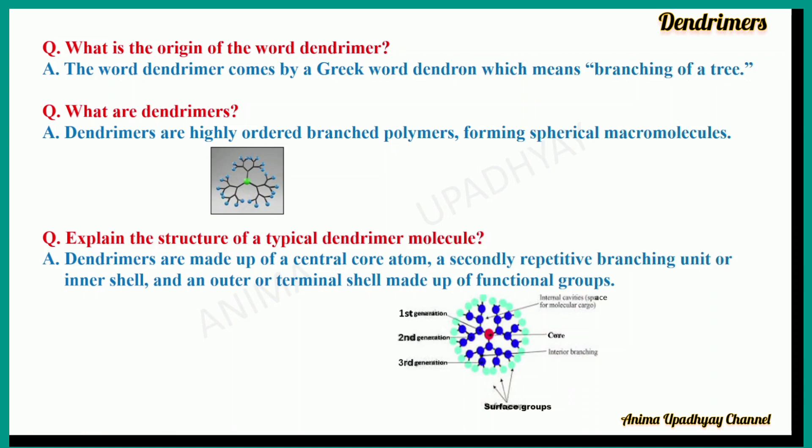So, what are dendrimers? Dendrimers are highly ordered branched polymers forming spherical macromolecules.